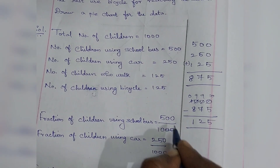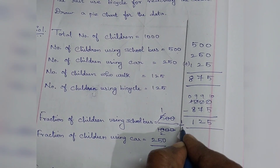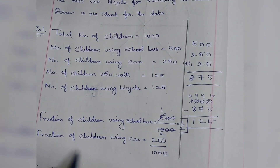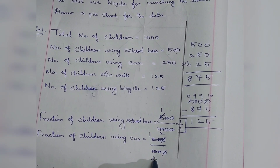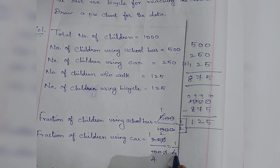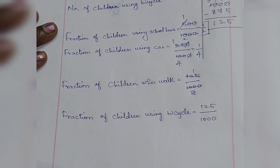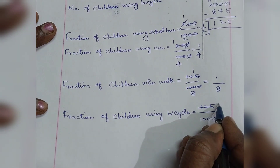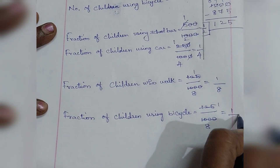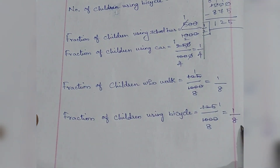Simplifying: 500/1000 — cancel the zeros and using the 5 times table, 500/1000 = 1/2. For 250/1000, cancel a zero and divide by 25: 250/1000 = 1/4. For 125/1000, dividing both by 125: 125/1000 = 1/8. Similarly 125/1000 = 1/8. So the fractions are 1/2, 1/4, 1/8, and 1/8.